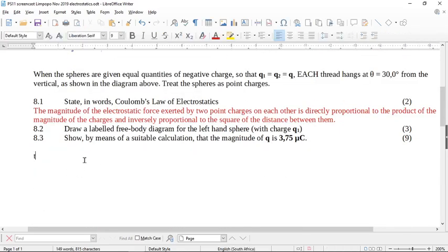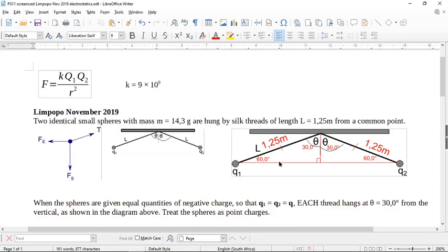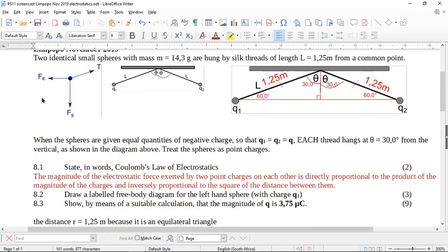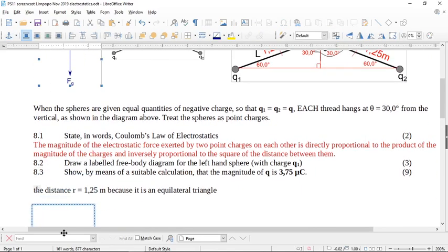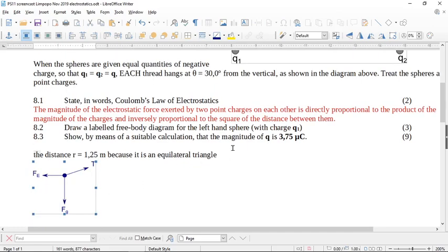We know that the distance r equals 1.25 meters, because it is an equilateral triangle. Okay, now remember I said to you, if it wasn't an equilateral triangle, you're going to have to use trigonometry to sort out the other side. Now we also have this force diagram. I'm going to move this diagram down here, okay?